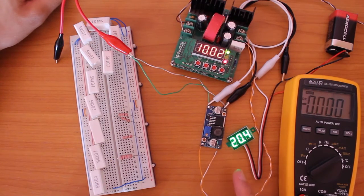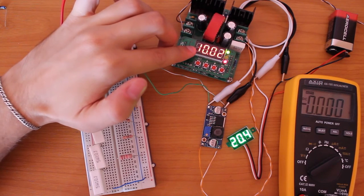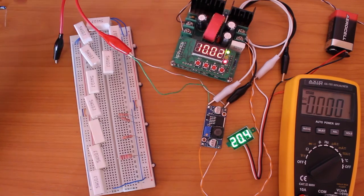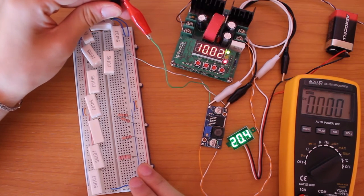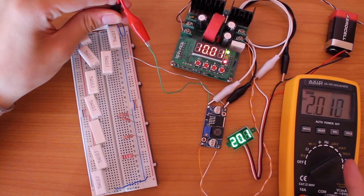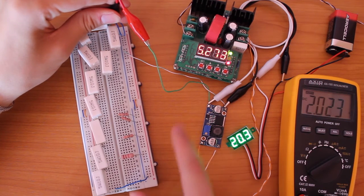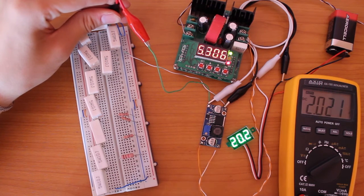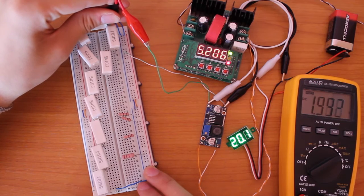I've set the boost converter to 20 volts, but I had to raise the buck converter to 10 volts so that it can supply the required current that the boost converter requires to get 2 amps out when I connect this 10 ohm load. And we should get 2 amps. And we do. We're drawing a bit over 5 amps from the power supply in order to output 2 amps at 20 volts.